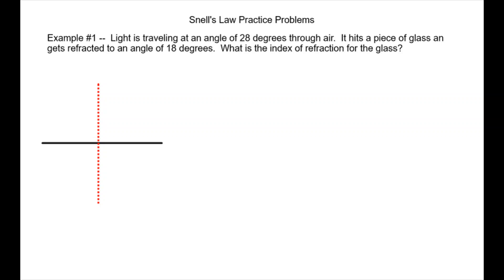So what we know is that light is traveling through air, so this top medium is air. Air has an n value of 1.0, that's the index of refraction. It's not given to us in the problem but we know that n1 is 1.0. It's always 1.0 for air, and then it's going in at an angle of 28 degrees.